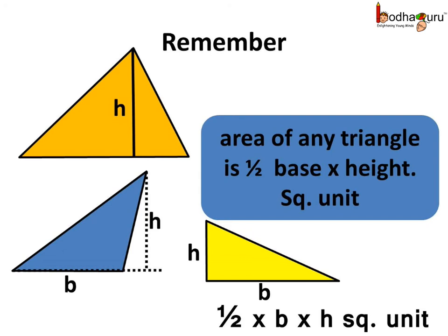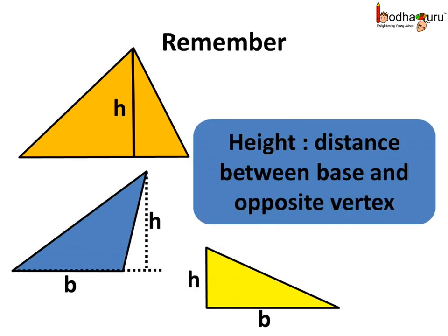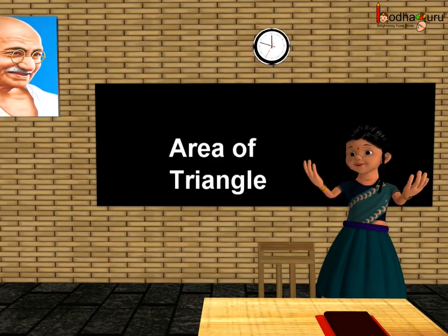So remember children, the area of any triangle is equal to half multiplied by base multiplied by height, and the unit would be square units, where the unit could be anything such as meter, centimeter, kilometer, etc. The distance between the base and the opposite vertex is called the height of the triangle. That's all for now. Bye-bye children.